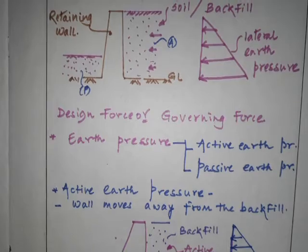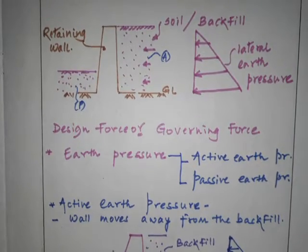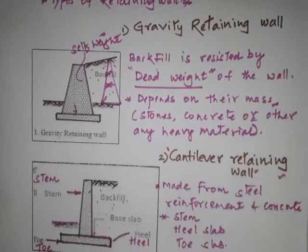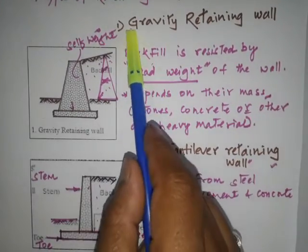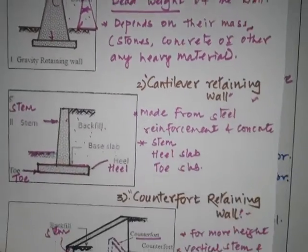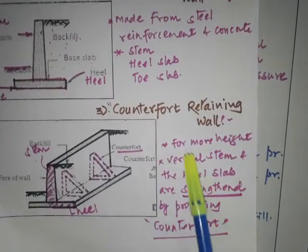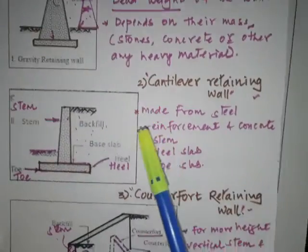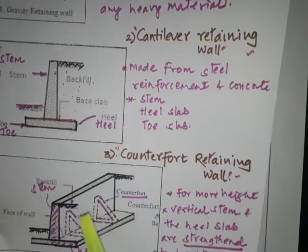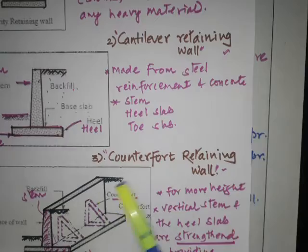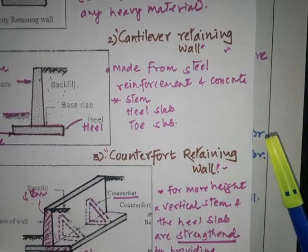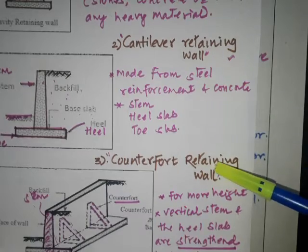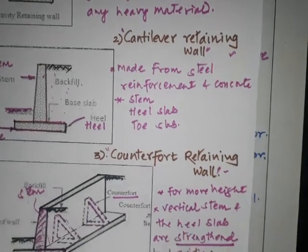Then we had a discussion over the different types of retaining wall. We discussed about what is a gravity retaining wall, what is a cantilever retaining wall, and what is a counterfort retaining wall. As I told you, at this level we have to design cantilever retaining wall and counterfort retaining wall.